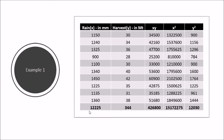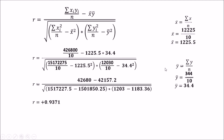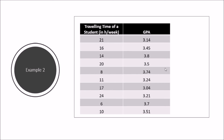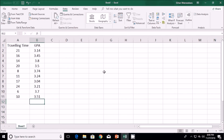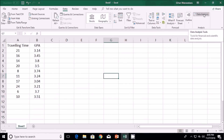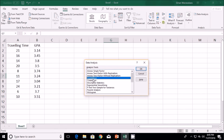An r of plus 0.9371 indicates that when rain is increasing, harvest is always increasing. Now we'll look at a second example, where I'll use Excel to find the r value. The example uses traveling time for students in hours per week and their GPA. I'll use the Data Analysis ToolPak in Excel to find the r value.